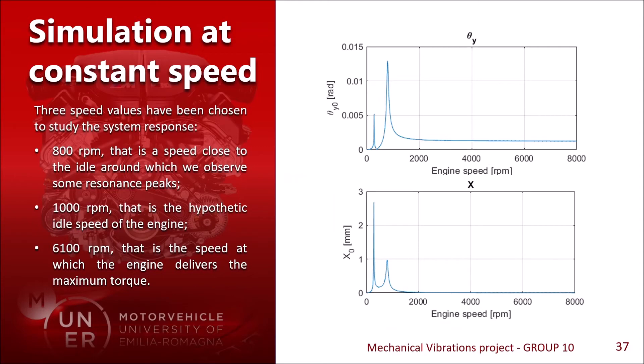For the second part of the study, to test the engine at constant speed, we chose 800 rpm, which is a hypothetical idle engine speed. We were not able to find in literature the actual idle speed of the engine, so we decided to test 800 rpm, which is also close to some resonance peaks, then 1000 rpm, which could be a better candidate for the idle speed, and then 6100 rpm, which is where the engine delivers the maximum torque.